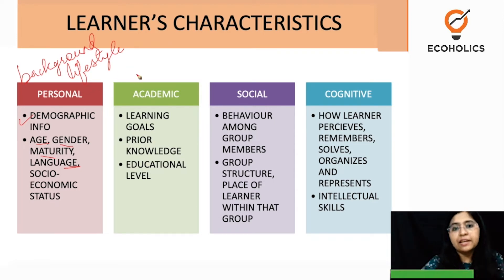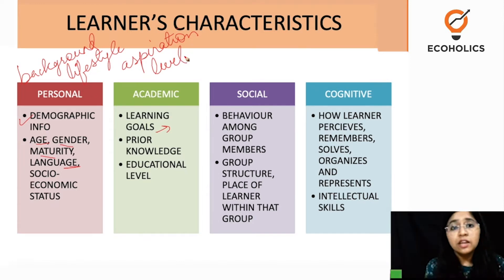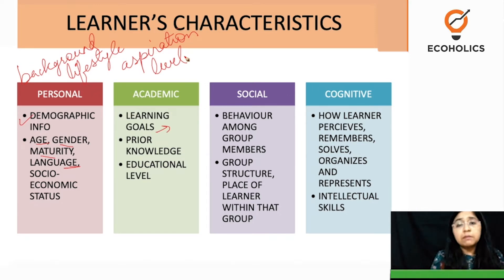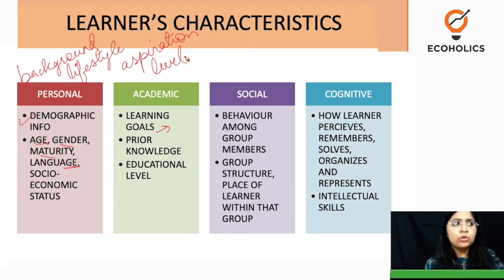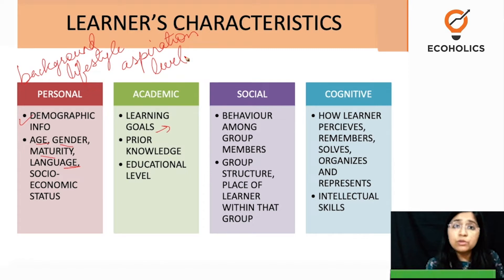Moving on, the second is the academic characteristics, which define the goals — the aspiration level of the learner. How far in qualification does that student want to go? Every student's aspiration level would be different according to different factors at home, professionally, or personally. Some students might come from a family with a business background, and the aspiration level could be to take over and expand the family business in a beautiful manner.